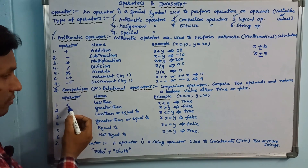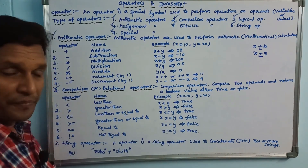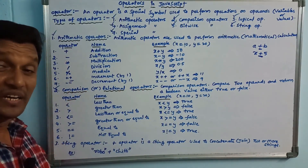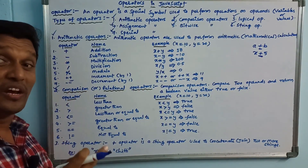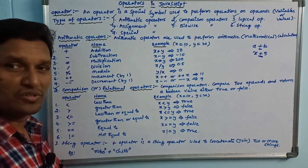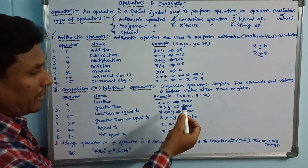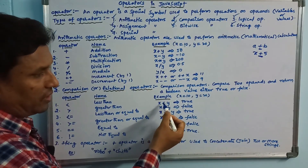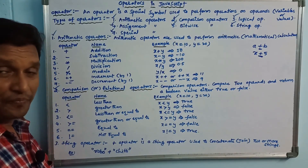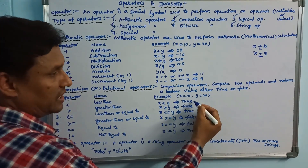First operator is less than. For example, x equals 10, y equals 20. x is less than y — this returns a boolean value. The condition is true or false. If we substitute the values, x is 10 and y is 20, then 10 less than 20, the result is true.